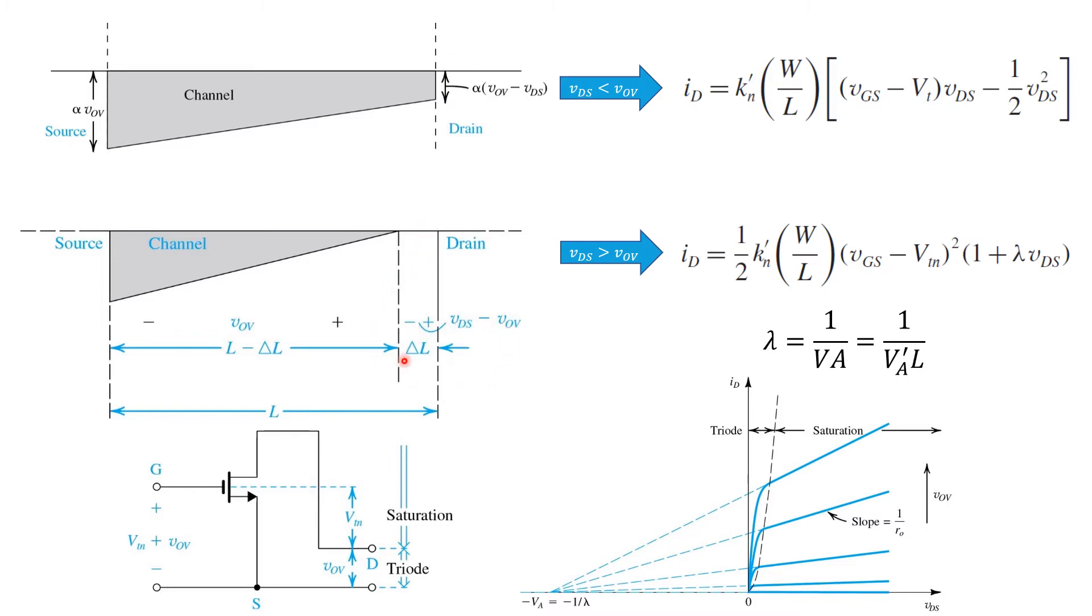Channel length modulation does have an effect on the drain current. For larger values of VDS, the channel gets shorter and the drain current increases slightly. This is captured by adding an extra term to our square law expression. When VDS is small, this term becomes negligible. But as VDS increases, even for fixed VGS, the drain current will start to increase again linearly.